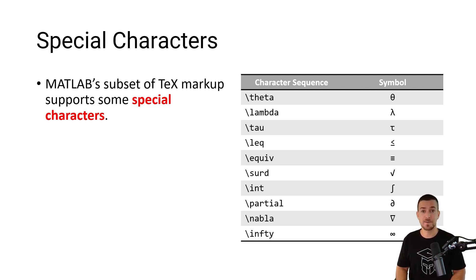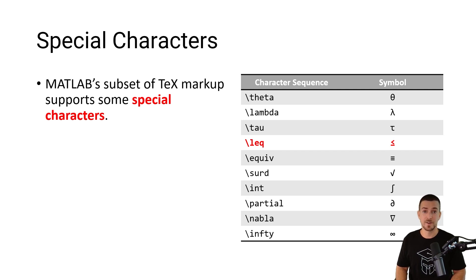All of these special characters begin with the backslash character. As an example, if you wanted to insert the relational operator less than or equal to, you would insert the characters backslash l e q. I've also included a link to a handout in the description of this video that contains a more complete list of special characters that you can use. Alright, let's head back to MATLAB.